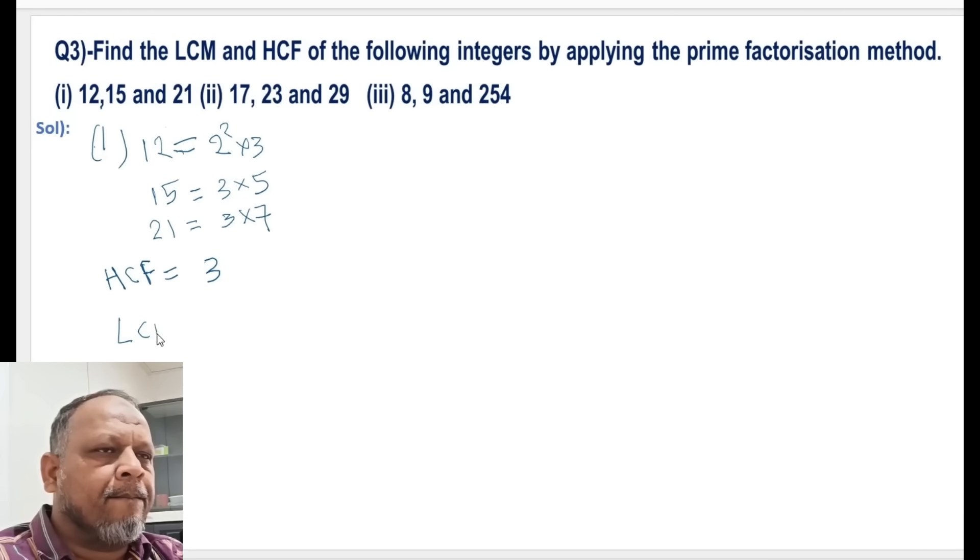For LCM we have to take the greater power of all primes and that is equals to 2 power 2 multiplied by 3 multiplied by 5 multiplied by 7.